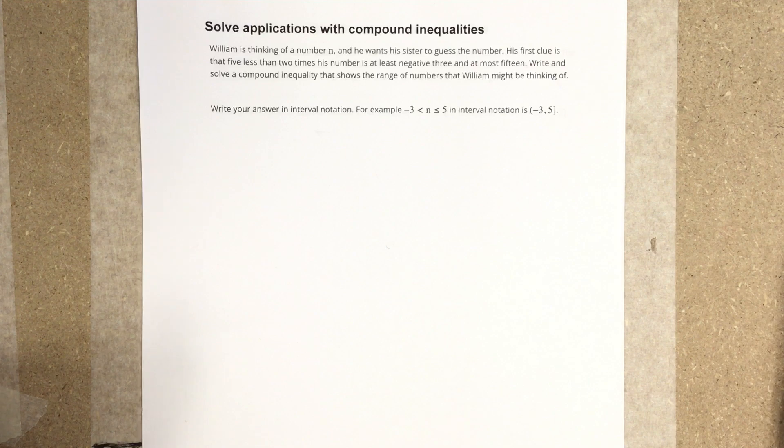It says William is thinking of a number N, and he wants his sister to guess the number. His first clue is that 5 less than 2 times his number is at least negative 3, and at most 15. Write and solve a compound inequality that shows the range of numbers that William might be thinking of.